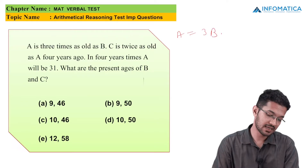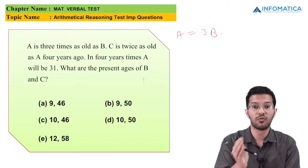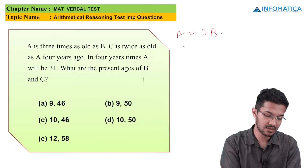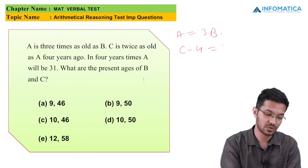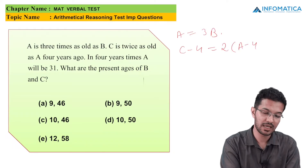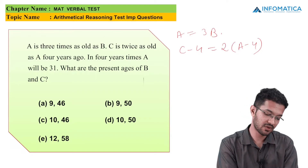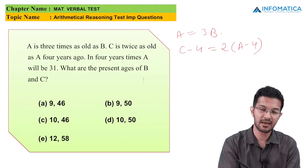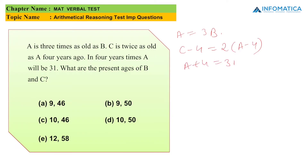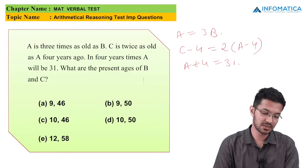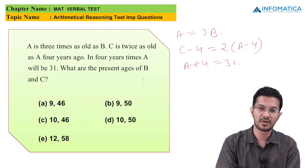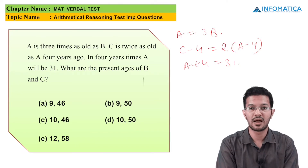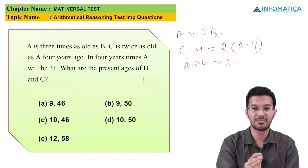From the second condition — C is twice as old as A was 4 years ago — we write: C − 4 = 2(A − 4). The third condition gives A + 4 = 31. So we have three equations: A = 3B, C − 4 = 2(A − 4), and A + 4 = 31. Solving the third equation: A = 31 − 4 = 27.